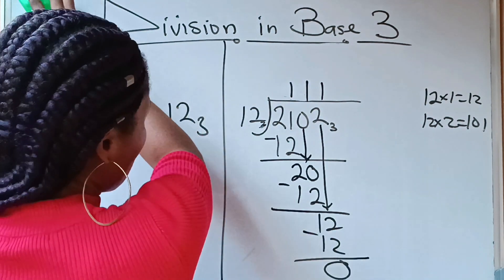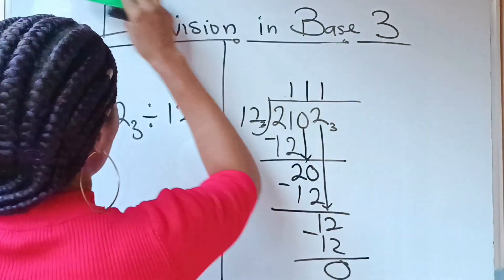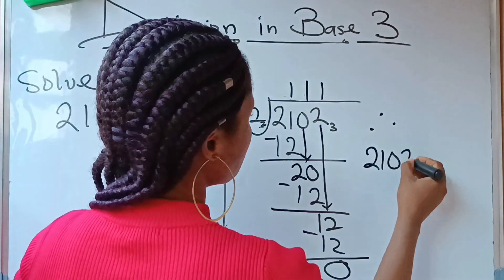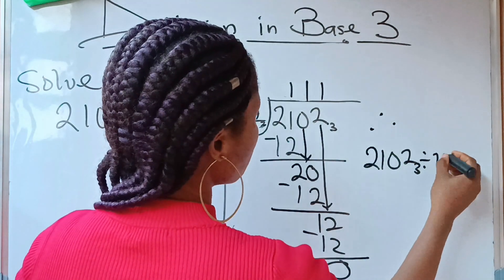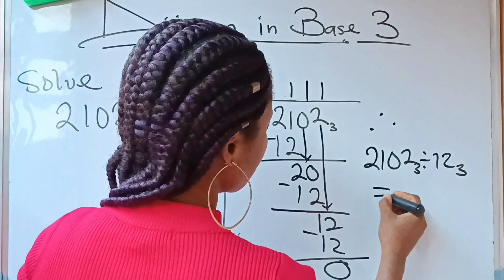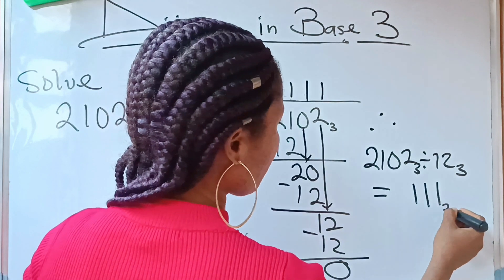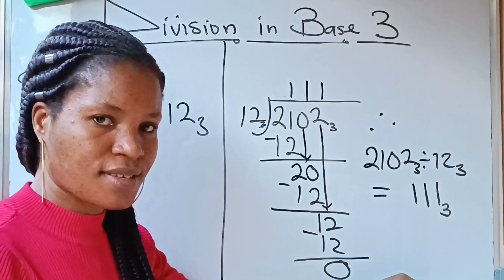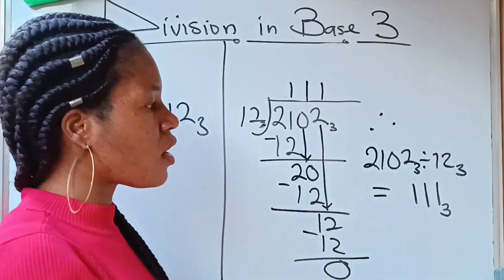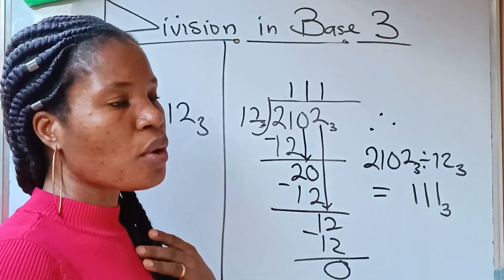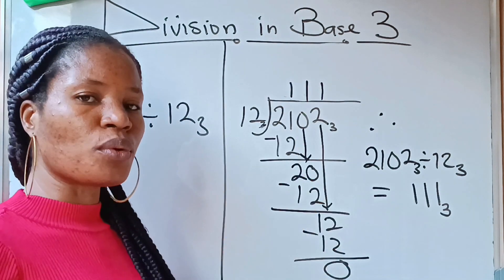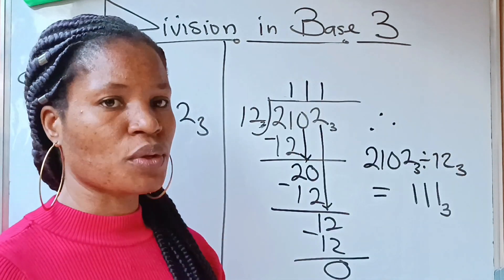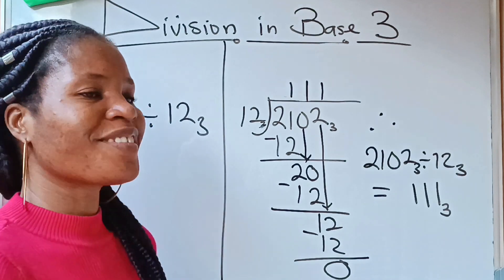Therefore, 2102 in base 3 divided by 12 in base 3 is equal to 111 in base 3. Let me know in the comment section if you actually got this and understood it, or if you did not understand it, so I'll know whether to make more videos on division in different bases.